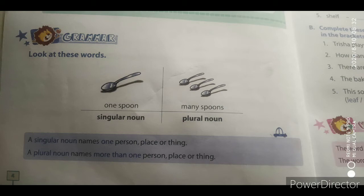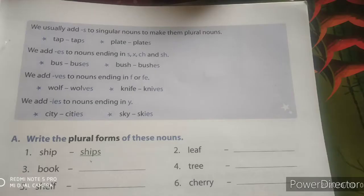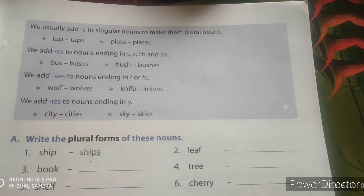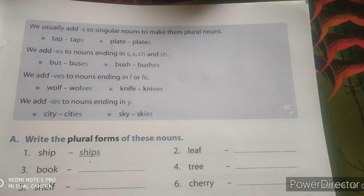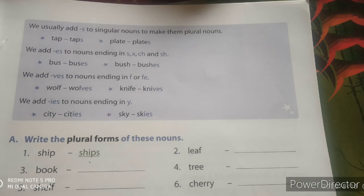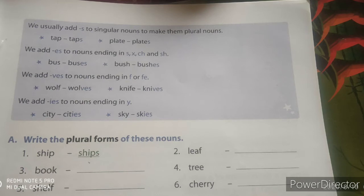एक plural noun में बहुत सारे लोग, बहुत सारे स्थान और बहुत सारी वस्तुएं होती हैं. तो for example हम जानेंगे: अब singular noun को plural noun में कैसे change करते हैं, इसे बनाने के लिए we usually add 's' to singular nouns to make them plural nouns. Singular noun को plural noun बनाने के लिए हम 's' का उपयोग करते हैं.